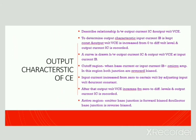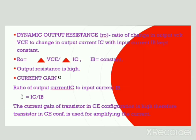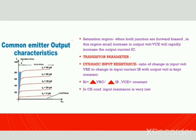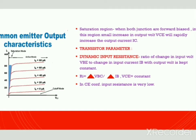Now coming to the saturation region. In the saturation region, the emitter-base junction is forward biased. When both junctions are forward biased, the transistor operates in saturation region. A small increase in output voltage causes a rapid increase in output current IC.